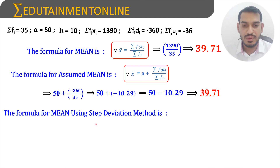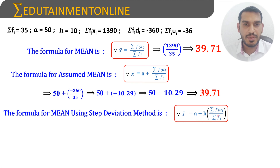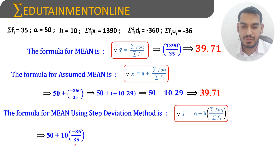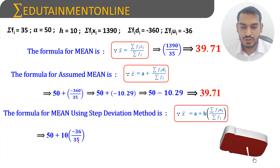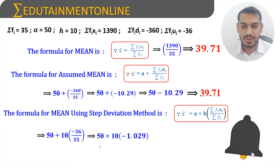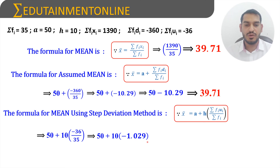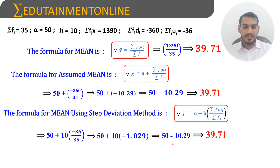For the Step Deviation Method: mean = a + h · Σ(fi·ui) / Σfi = 50 + 10 × (−36 / 35). Simplifying: 10 × (−36/35) = 10 × (−1.029) = −10.29. So mean = 50 − 10.29 = 39.71.